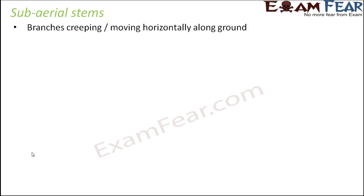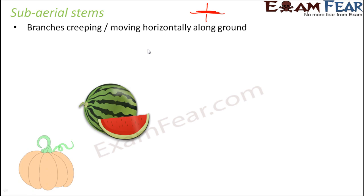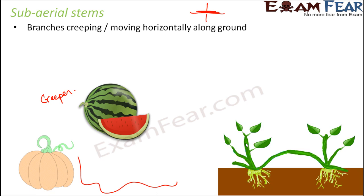Sub-aerial stems do not grow above the ground; instead they grow along the ground horizontally. Aerial means above the ground, sub-aerial means along the ground, and underground means below. In sub-aerial stems, the branches creep or move horizontally along the ground. Examples include pumpkin and watermelon, whose stems move horizontally rather than upright.